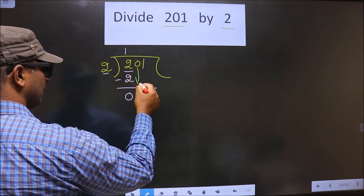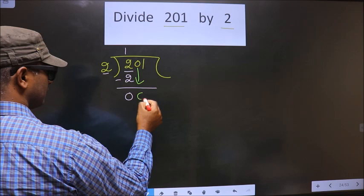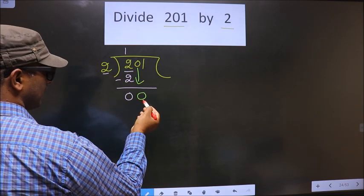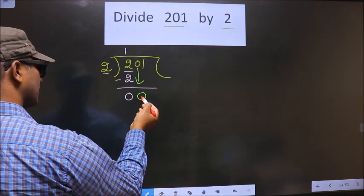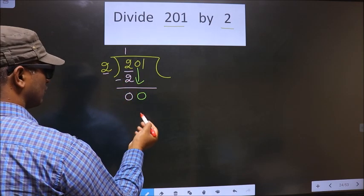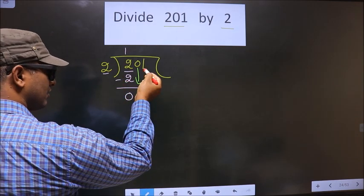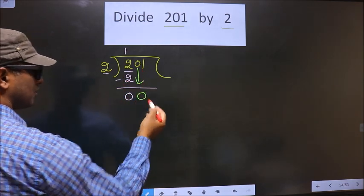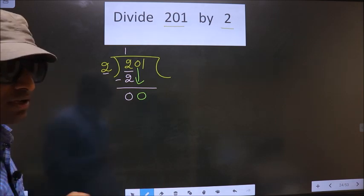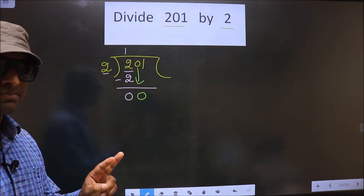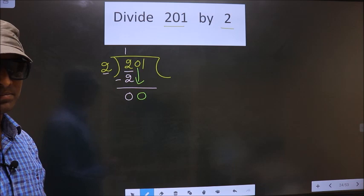Now, you take the beside number down that is 0. So, now here we have 0. 0 is smaller than 2. Here itself, we cannot bring the other number also down. We cannot bring 2 numbers at the same time.